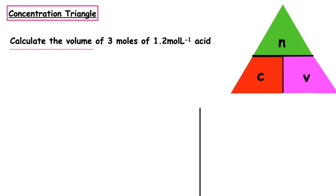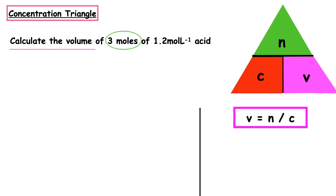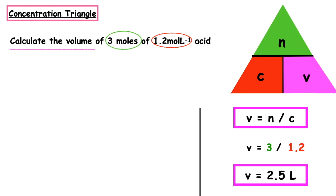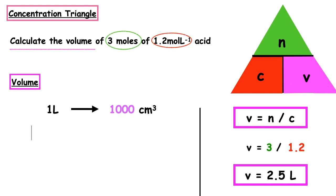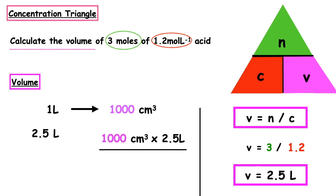This question wants us to calculate the volume of 3 moles of 1.2 moles per litre acid. V = N ÷ C. Number of moles = 3, concentration = 1.2. So V = 3 ÷ 1.2 = 2.5 litres. If we wanted to convert to centimetres cubed: 1000 × 2.5 ÷ 1 = 2500 cm³. Of course, litres is the preferred unit to work in.